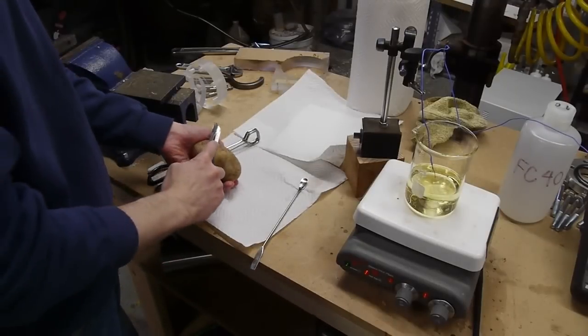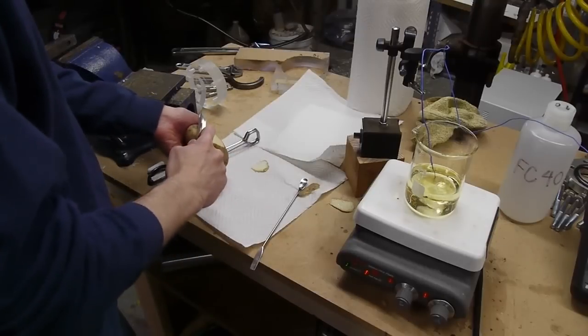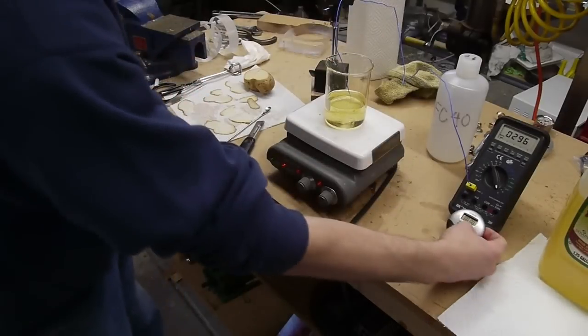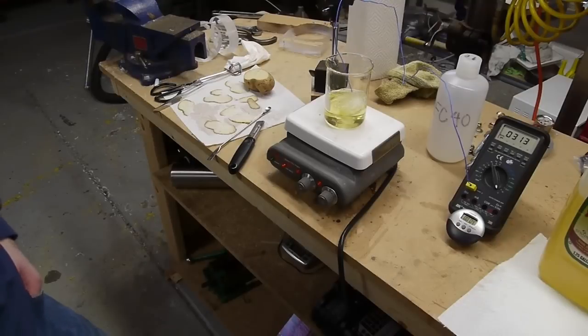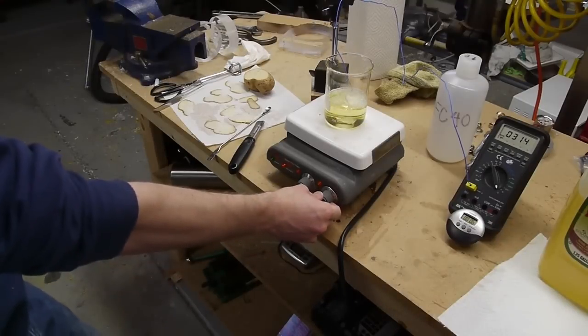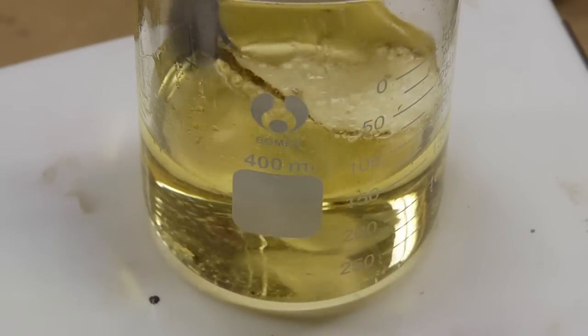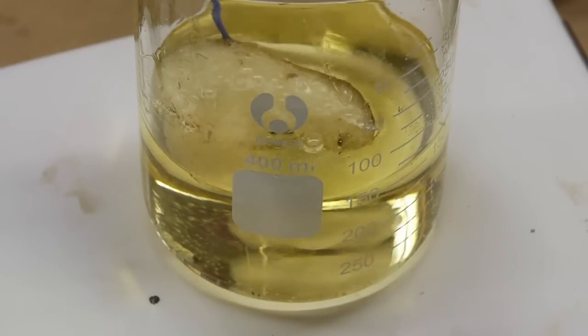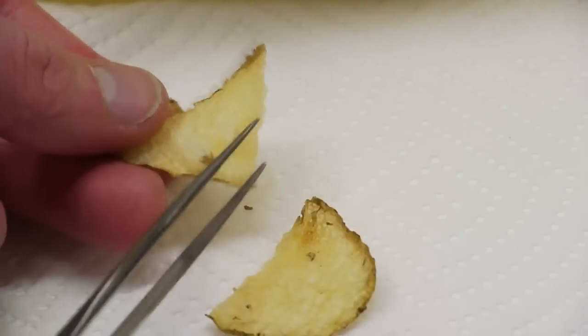So I cut some potato pieces off. I made some very thin chip-like things and dumped them into the hot oil. And I was going to just measure the time it took to brown it properly and then use the same time for the FluoroInert bath. So that all went pretty well and I got a pretty decent looking potato chip. That was about 300 degrees F after the temperature came down, after I put the chip into the oil. And it cooked for about 3 minutes 30 seconds.